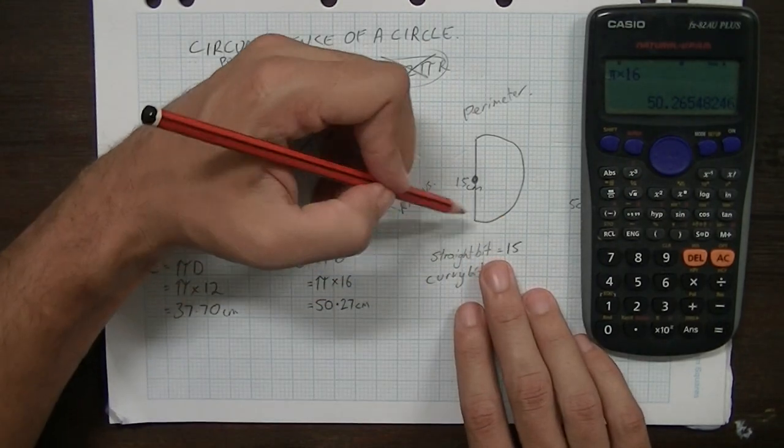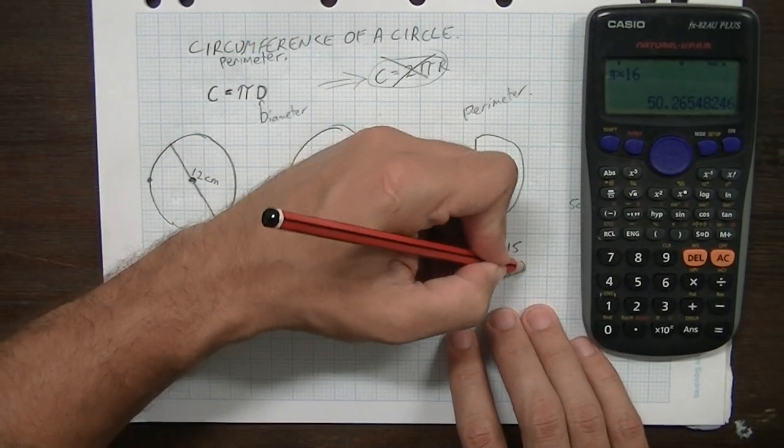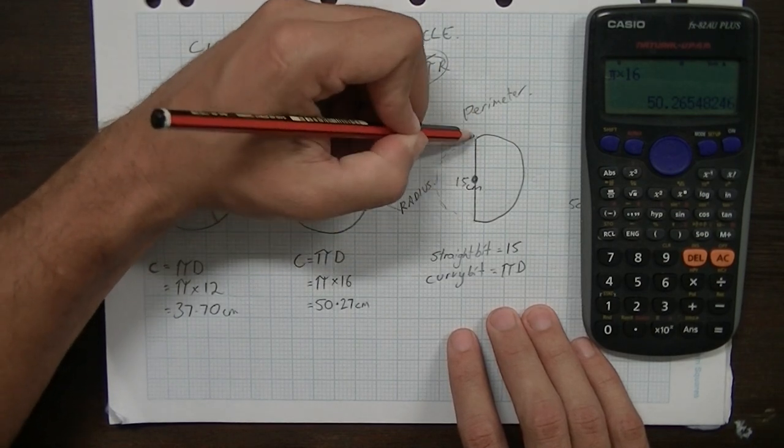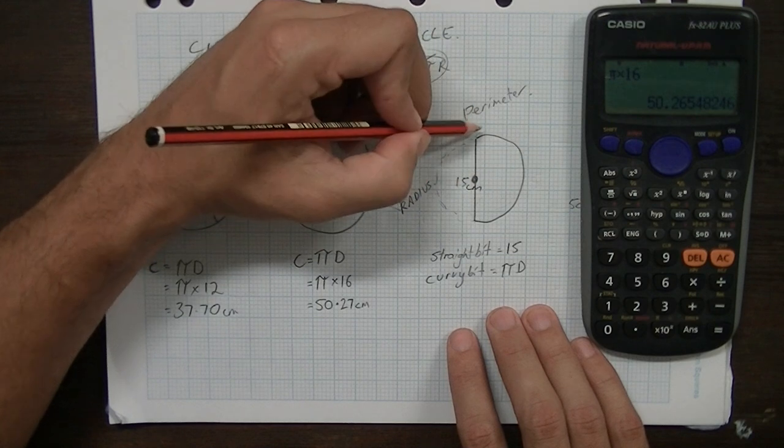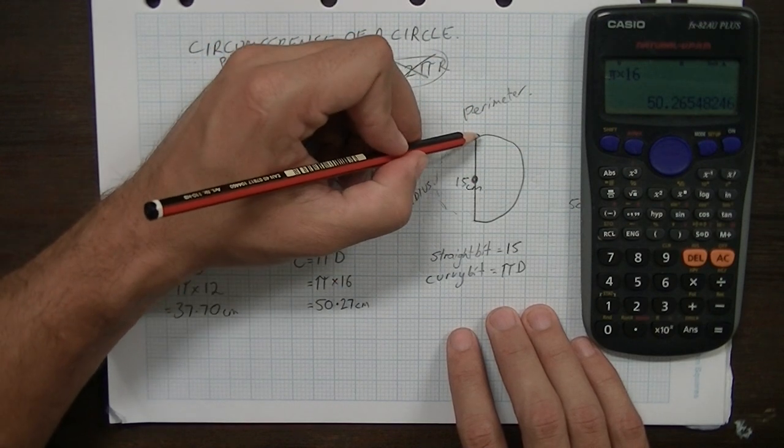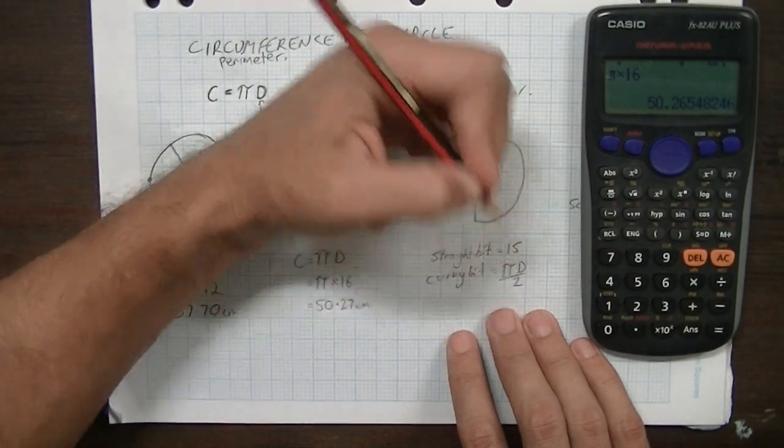It's going to be pi d. That's the circumference of a full circle. So that's pi d. So if we only want that bit of the curvy bit, it's pi d divided by 2. It's half of it.